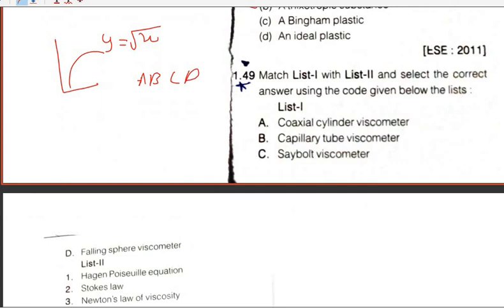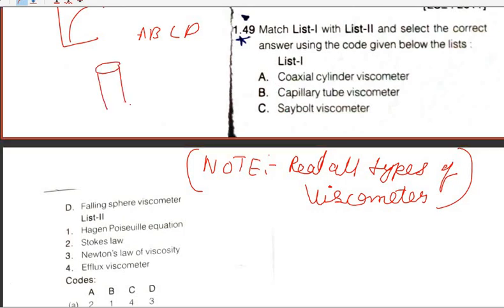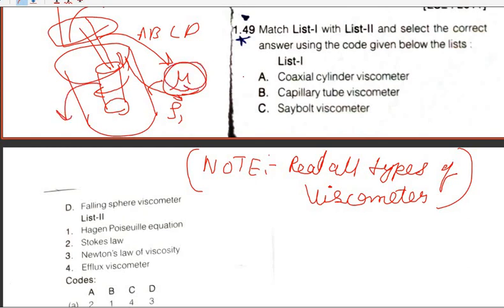This question involves matching viscometer types. The co-axial cylinder viscometer uses two cylinders; when one is rotated by a motor, the torque is measured. Given the diameter of the beaker, the diameter of the rod, and density, viscosity can be calculated. So it is a cylinder viscometer.